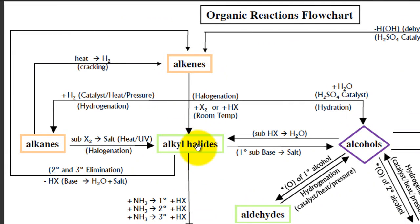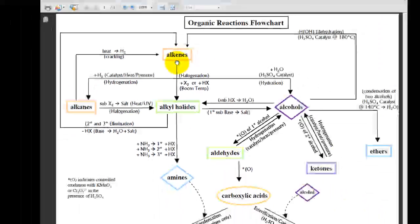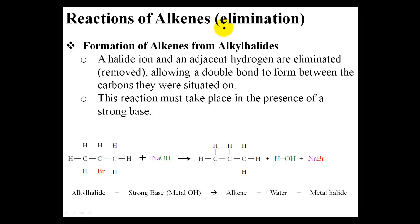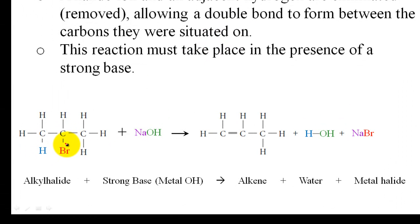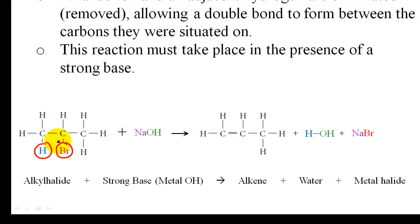For our next reaction, we'll look at alkyl halides and alkenes and how we can convert them back and forth. One method is through elimination reactions. What you're doing is forming an alkene from an alkyl halide — a halide ion and its adjacent hydrogen are eliminated, meaning removed, allowing a double bond to form between the carbons they were situated on.